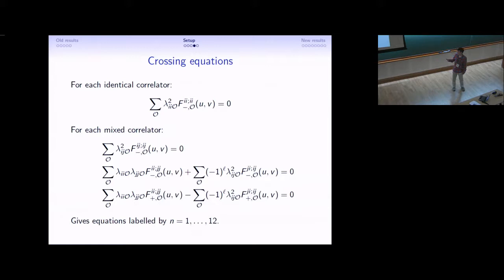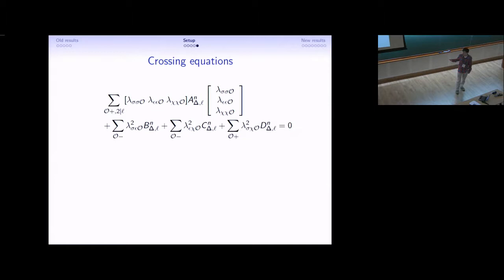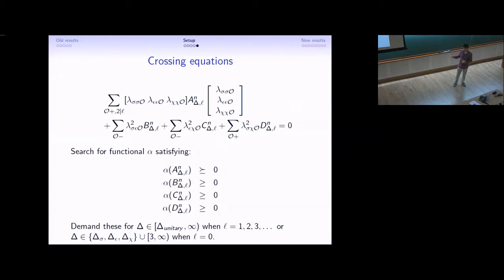We can write the crossing equations as a quadratic form, treating A as a 3 by 3 matrix, and B, C, and D are 1 by 1 matrices. The entries depend on these f functions, f of delta L.